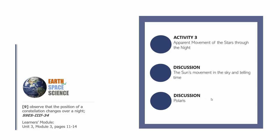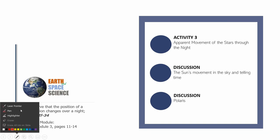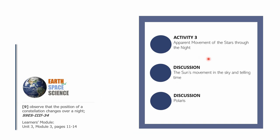Welcome to the 14th episode in the Earth and Space Science 9 series of the Knowledge Catalogue. This session is divided into the following parts, the first part being activity number three, which is entitled Apparent Movement of the Stars Through the Night.